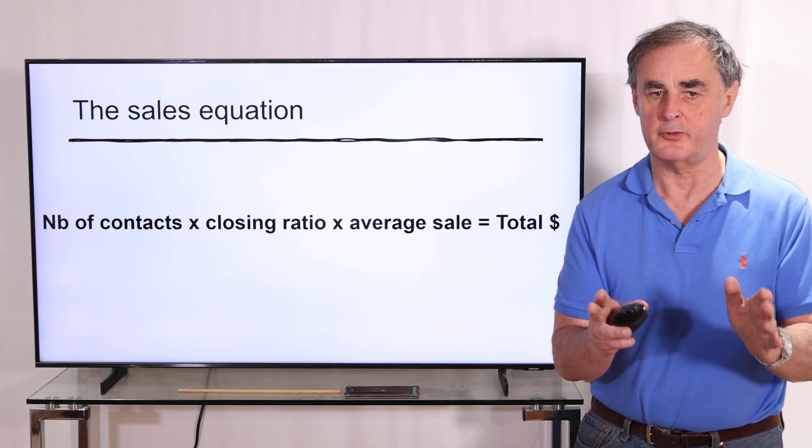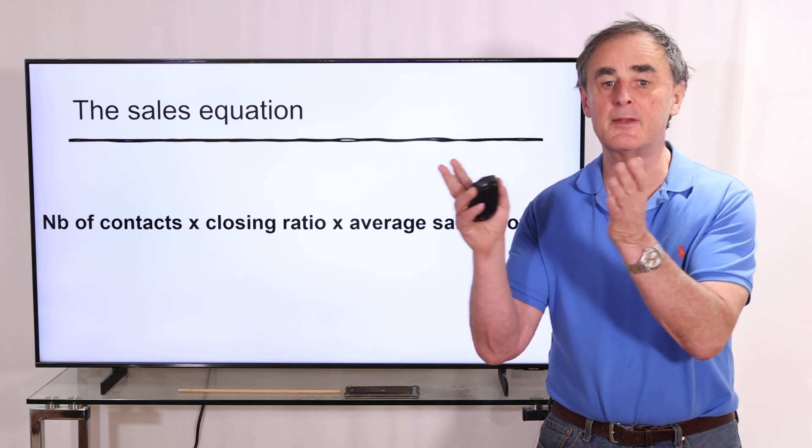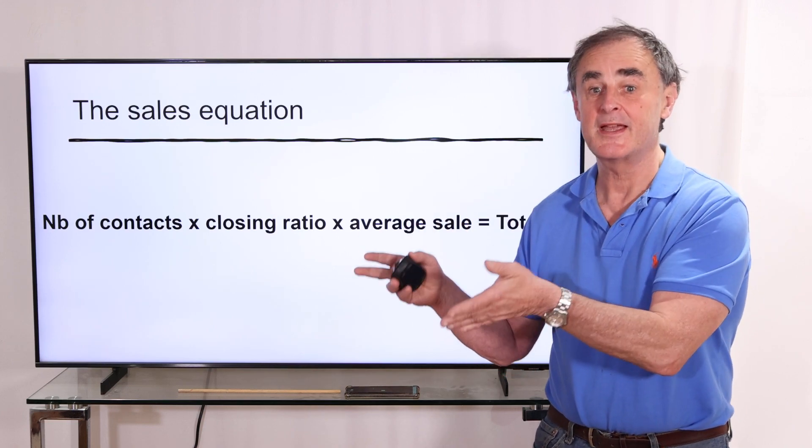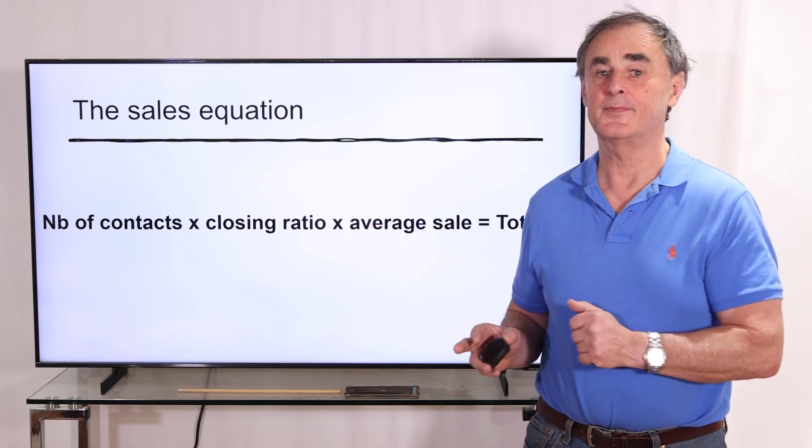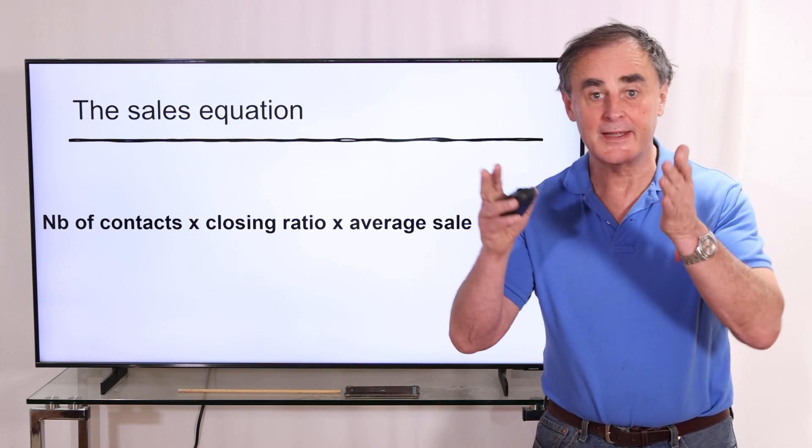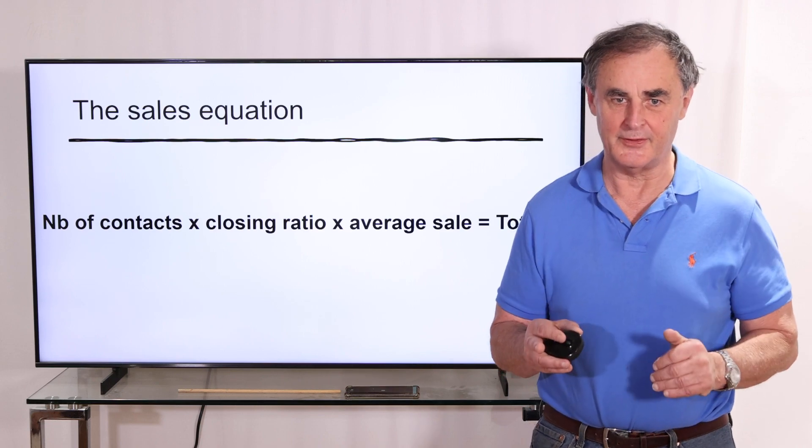The sales equation has three numbers: the number of contacts multiplied by your closing ratio multiplied by your average sales makes the total sale. We're going to see how Action Client can help you with each of these figures.